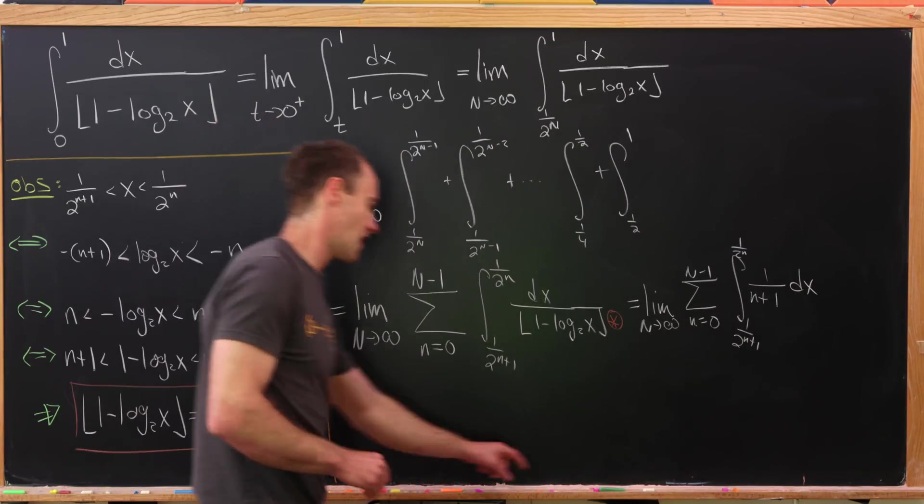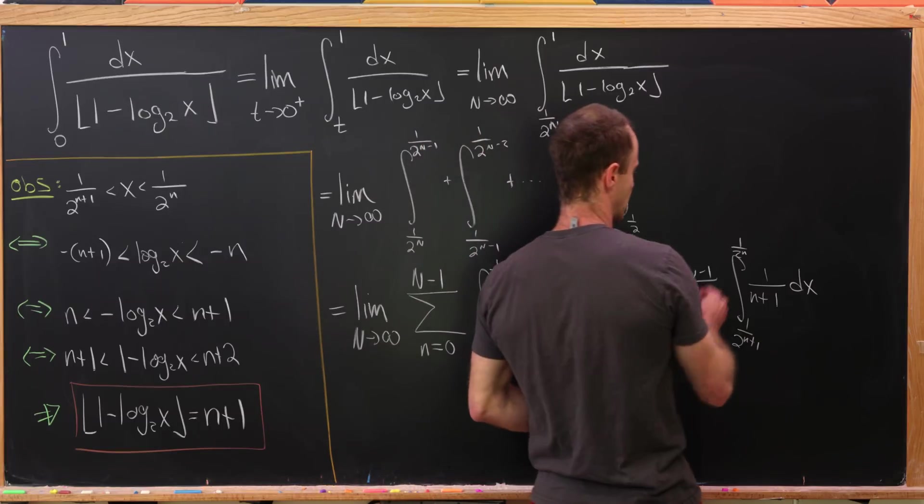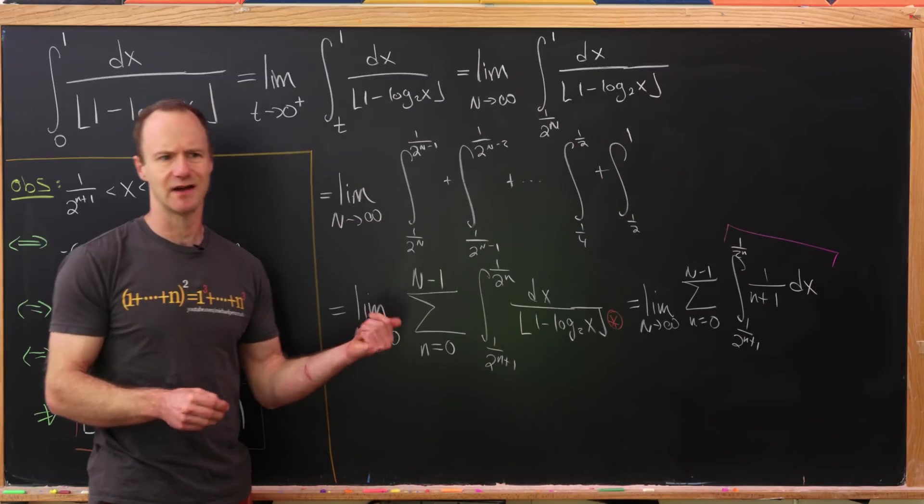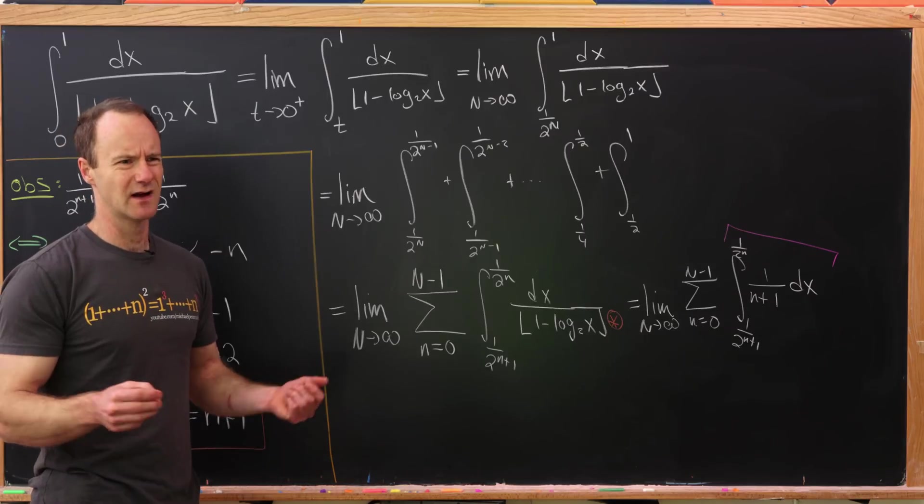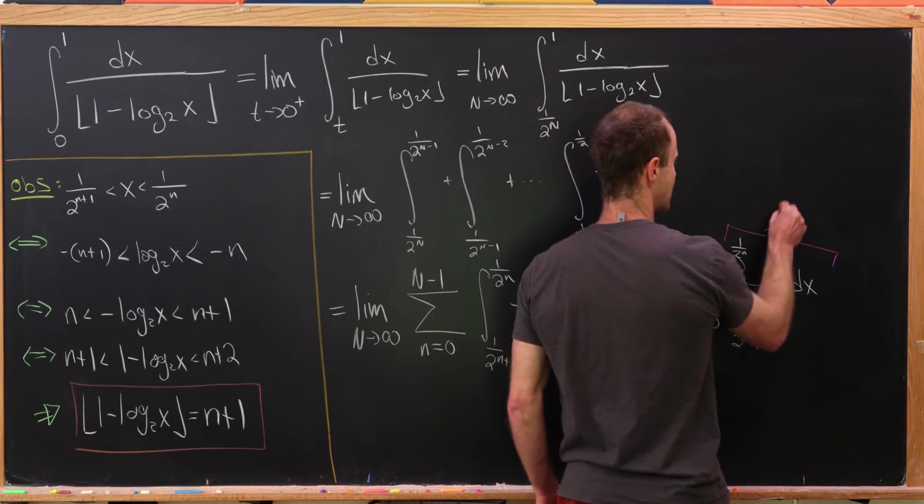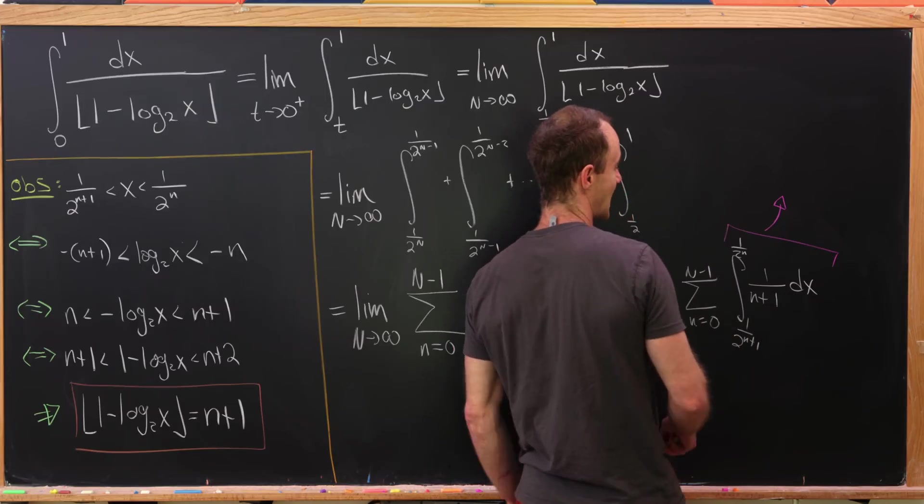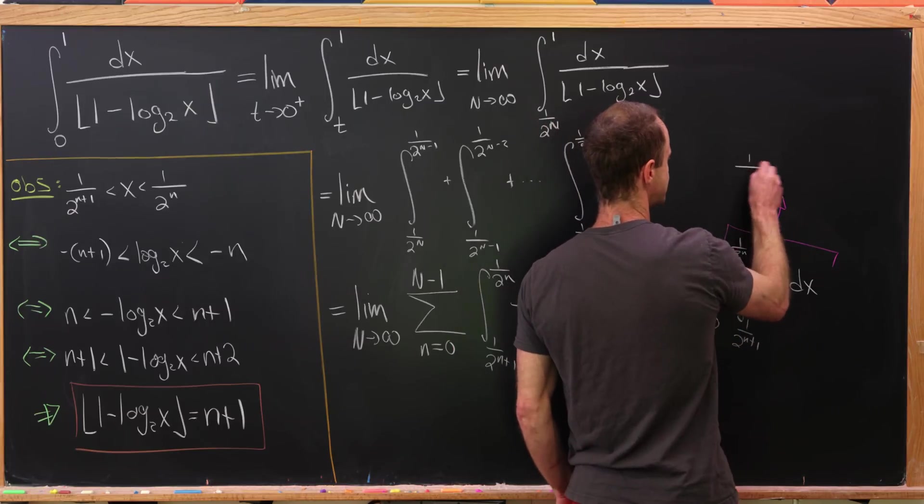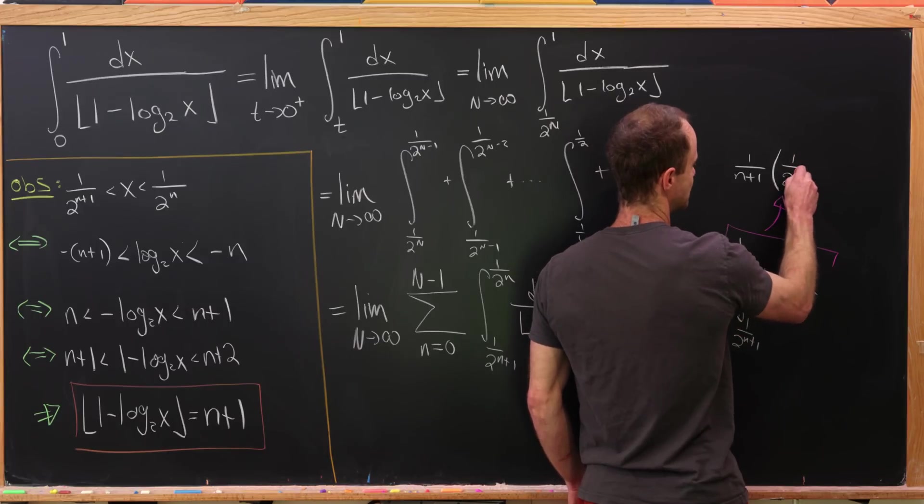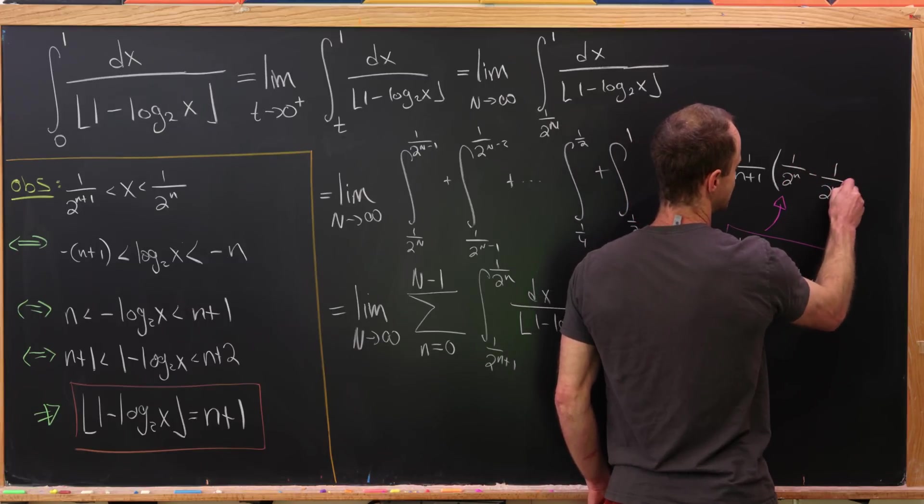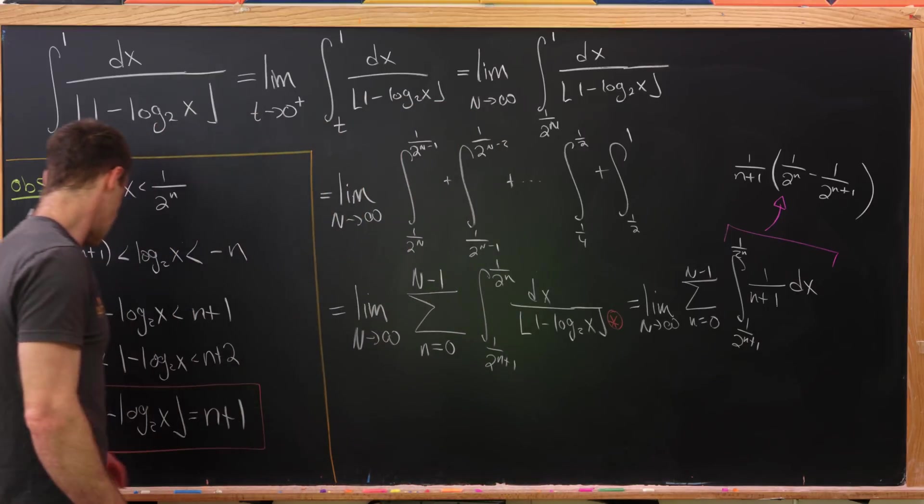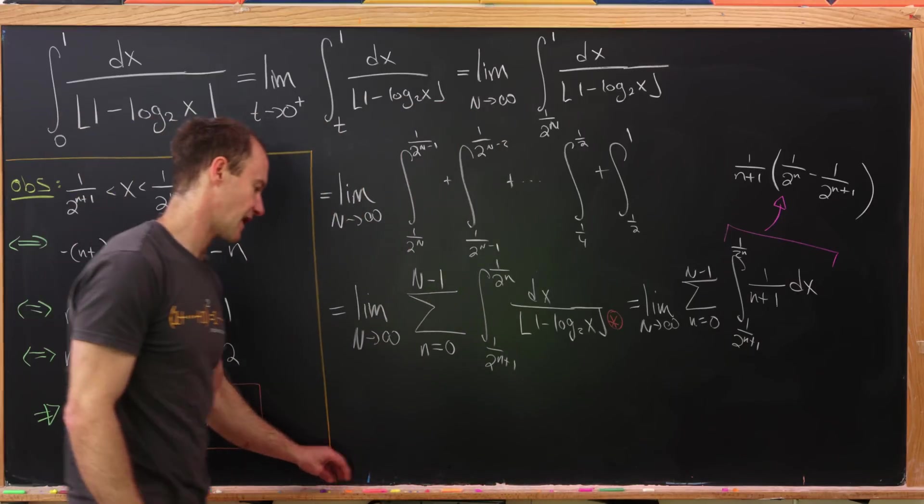But if we're integrating a constant over an interval, we simply get a constant times the length of that interval. Well, essentially it's just the area of a rectangle, so that's how you want to think about that. Okay, so that means we can calculate this as 1 over n plus 1 times 1 over 2 to the n minus 1 over 2 to the n plus 1. Again, it's the constant times the length of that interval.